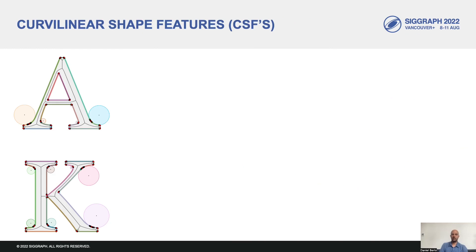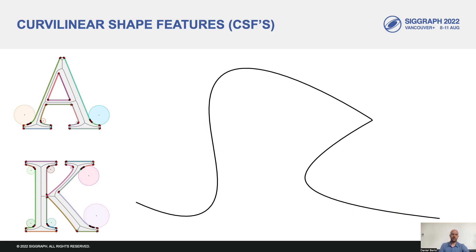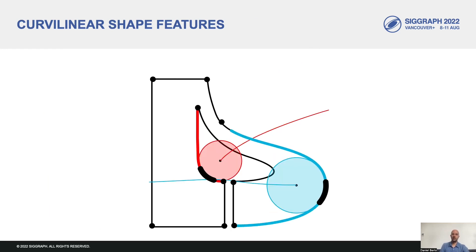Curvature extrema, especially concavities, play an important role in the perception of shape and its decomposition into parts. We characterize concave and convex outline features with curvilinear shape features, which I will call CSFs for short. Each CSF consists of a curvature extrema or corner, its corresponding circle of curvature, a contact region at which curvature is approximately constant, and two support segments extending until the next CSF. We identify an initial set of CSFs through the interior and exterior medial axis of the outline. This set is not necessarily complete, so we proceed with identifying the remaining CSFs with a simple iterative procedure that computes local medial axis.